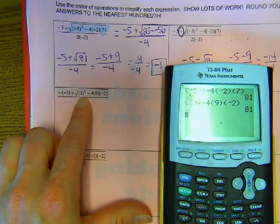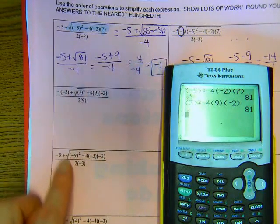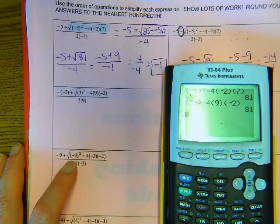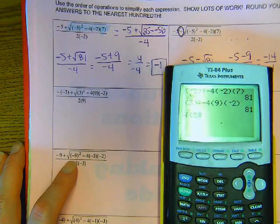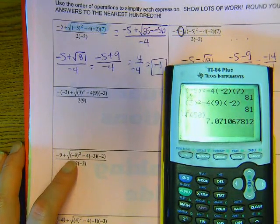Now, is it always going to be 81? No. And, also, what if you get something like 50? We don't know the square root of 50, so then you just round it.